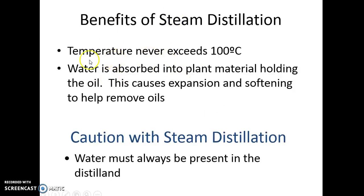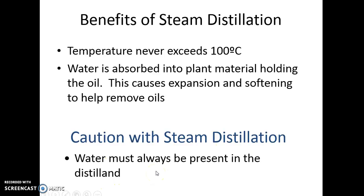The temperature never exceeds 100 degrees, which is still a high temperature but nothing that will destroy most compounds. Water is absorbed into the plant material, and it softens it and loosens the oils out. Whenever you do steam distillation, you must always have water present, so as you start running out of water, you must have a way to add more.